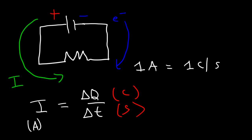An electric charge is associated with the quantity of charged particles. An electron has a charge equal to 1.6 times 10 to the negative 19 coulombs, and it's negative.